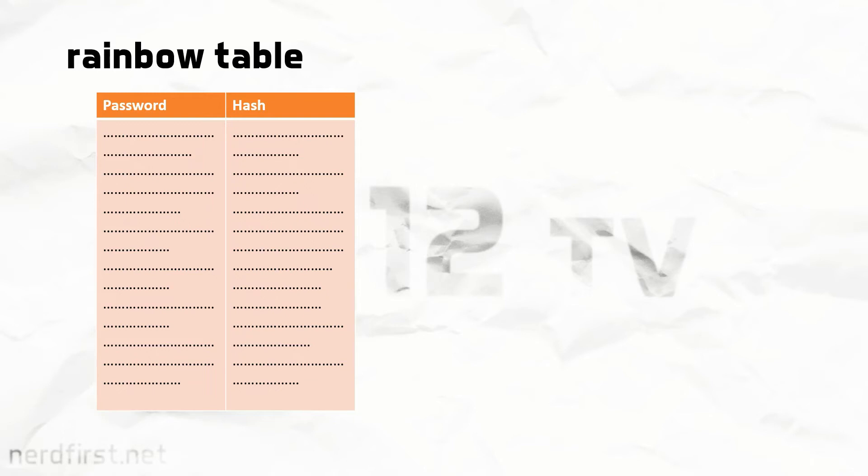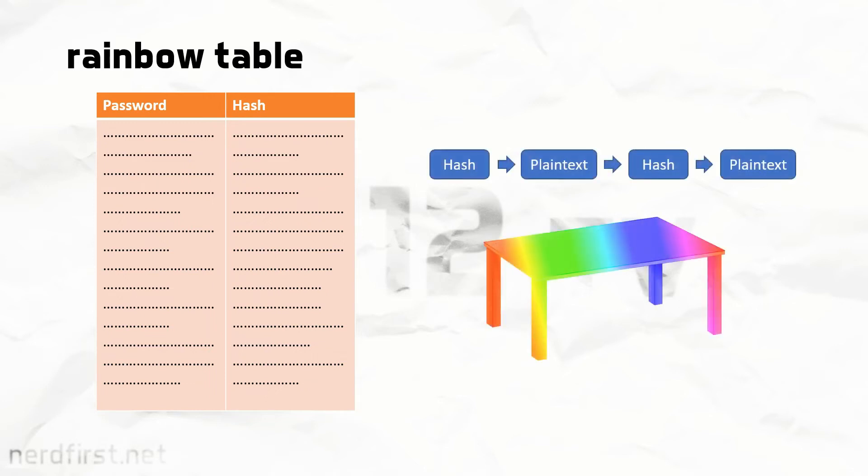Instead, using a lookup table, they could construct what is known as a rainbow table. A rainbow table is a re-representation of the contents within a lookup table, but set up in such a way that, instead of having to have every possible password and hash listed out, only a small number of hashes and plain text are being stored. However, the remaining ones can be computed using the ones that are actually present within the rainbow table itself.